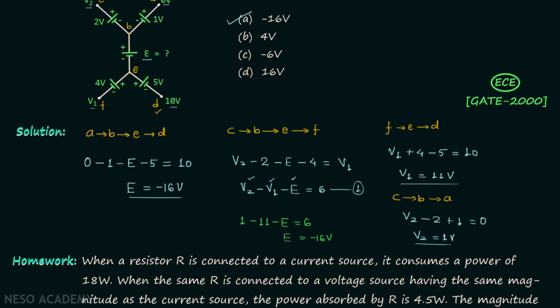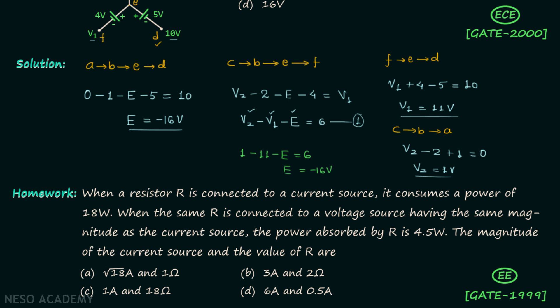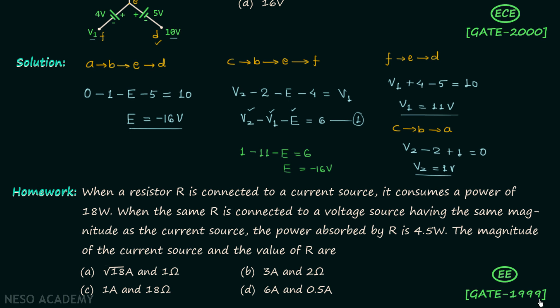So this is all for this problem. Now let us move on to our homework problem. The homework problem is taken from GATE 1999 Electrical Engineering exam. Read the problem and try to solve it, and once you have your answer, post it in the comment section.